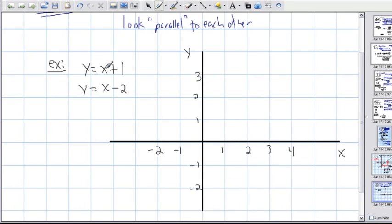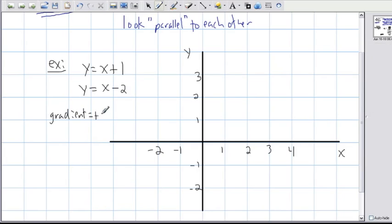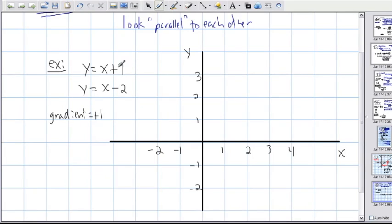And in both graphs I know that my slope is going to be positive 1. So both of them will have an m value of positive 1. That means the gradient of both of them will equal plus 1. And then in this equation, my y-intercept is positive 1 as well.